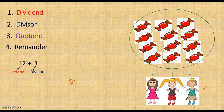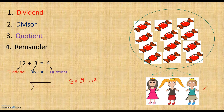What is the answer of 12 divided by 3? Three times what number gives 12? Three times 4 gives 12, so our answer is 4, and the answer is called the quotient. We can also write this division in the long division form — the divisor comes on the left side of the symbol, the dividend on the right side, and the answer at the top, which is called the quotient.